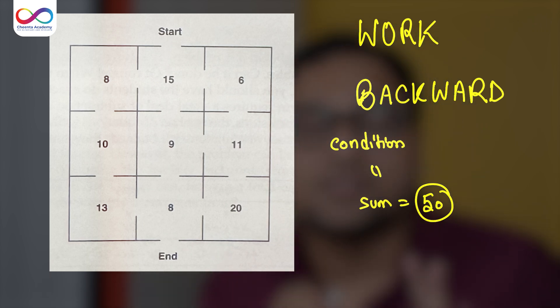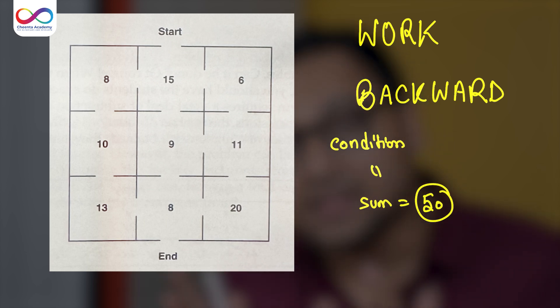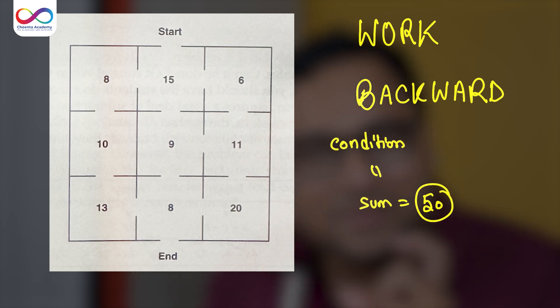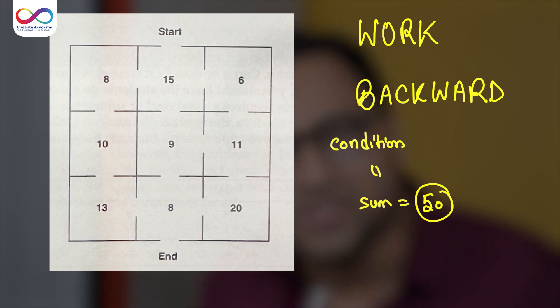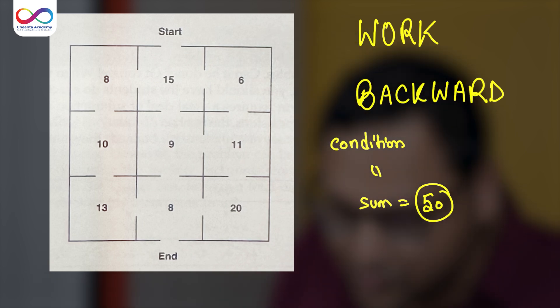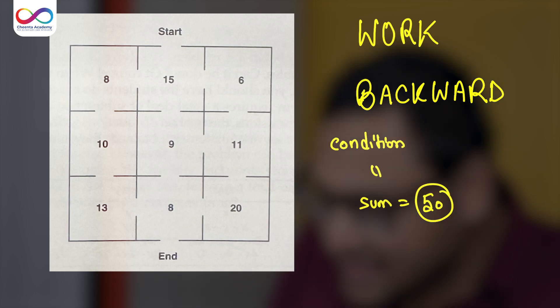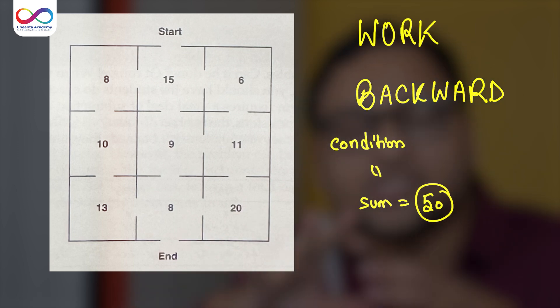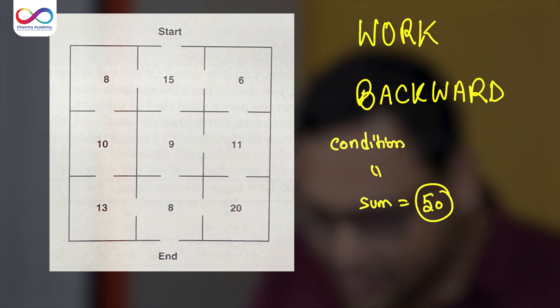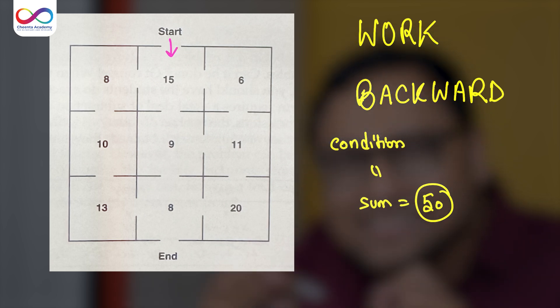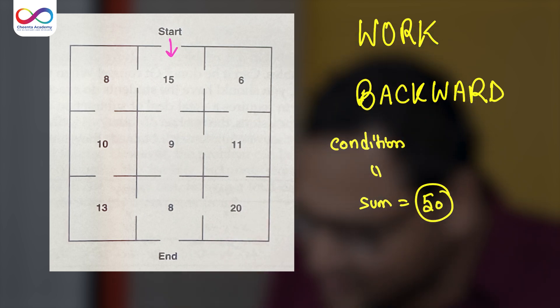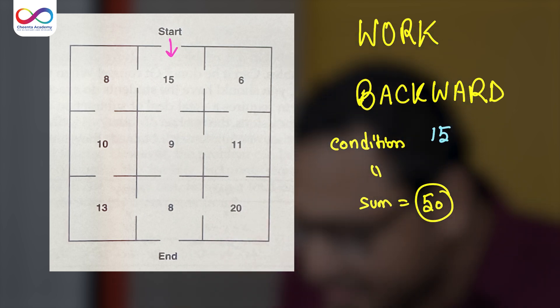First we have to observe a couple of things. In any mathematical problem of significant difficulty, the key to that problem is usually one or two observations. In this problem, you immediately realize that whatever you do, whichever path you go through, you have to go inside the 15 box.